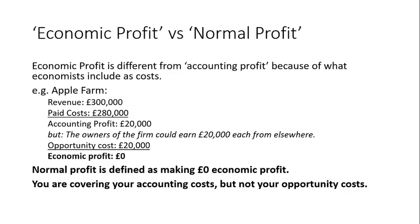We've already sort of gone through economic profit versus normal profit. Remember: economic profit is different from accounting profit because economists include opportunity cost. On the apple farm, if we're making 300,000 in revenue and paid costs of 280,000, we make 20,000 accounting profit. But if the owners could have earned 20,000 elsewhere, the opportunity cost is 20,000, making economic profit zero. So if I start an apple orchard making 20,000 and could have made 20,000 as an economics lecturer, I'm no better off.